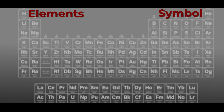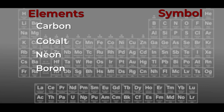Now, let us practice writing the symbols of some of the elements: carbon, cobalt, neon, boron, bromine and nickel. Let us practice writing the symbols of these following elements.